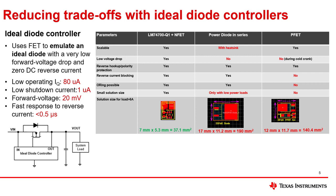Drawbacks of traditional discrete solutions can be overcome by using an ideal diode controller. An ideal diode controller is an integrated controller that drives a FET to emulate an ideal diode with very low forward voltage drop and zero DC reverse current. An ideal diode controller solution like LM74700-Q1 plus NFET offers specs like very low quiescent current of 80 microamps and response time of less than 0.5 microseconds to block reverse current. The table on the right shows a comparison between an ideal diode controller, power diode, and a PFET solution. To summarize, an ideal diode controller provides a scalable, small, and low forward voltage drop solution. In the coming slides, we will be seeing the use of different ideal diode controllers in some important applications.